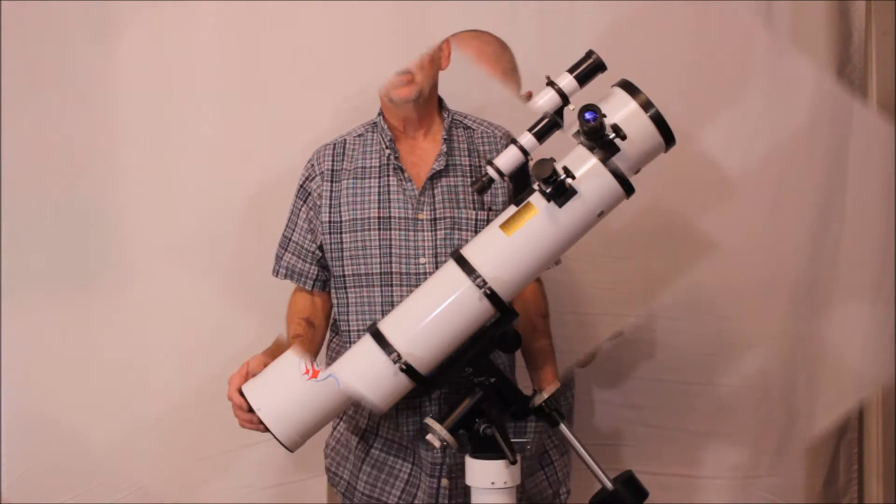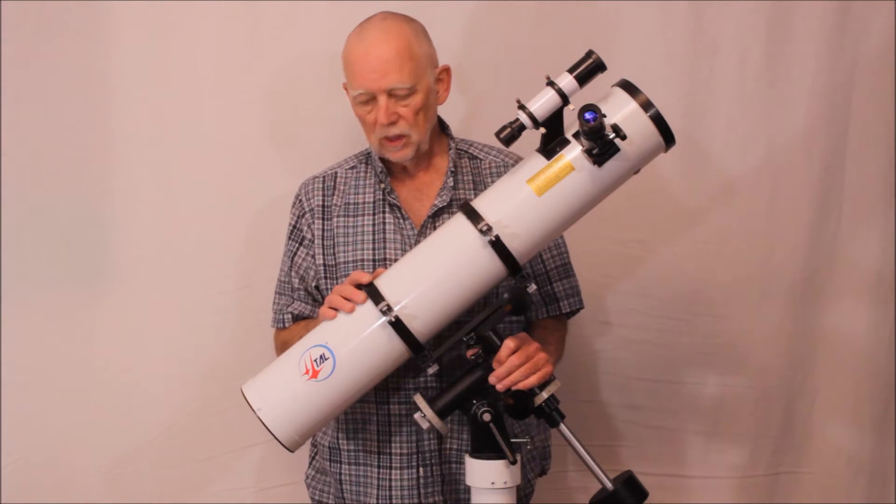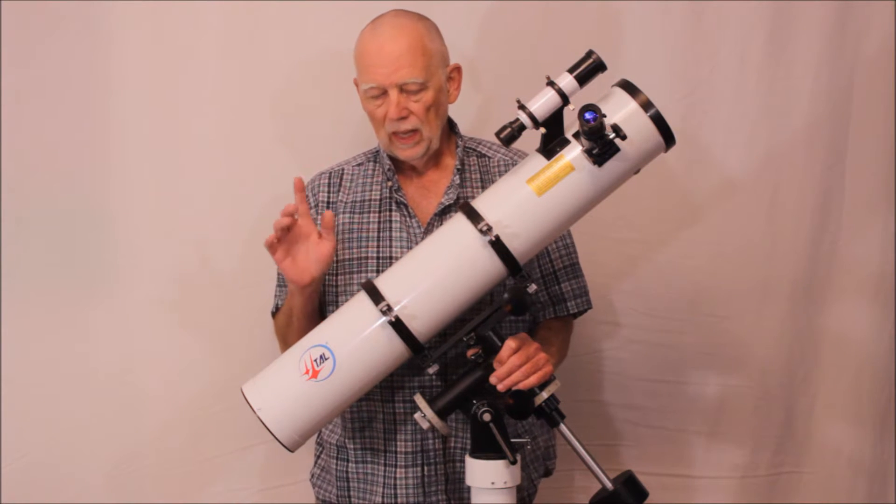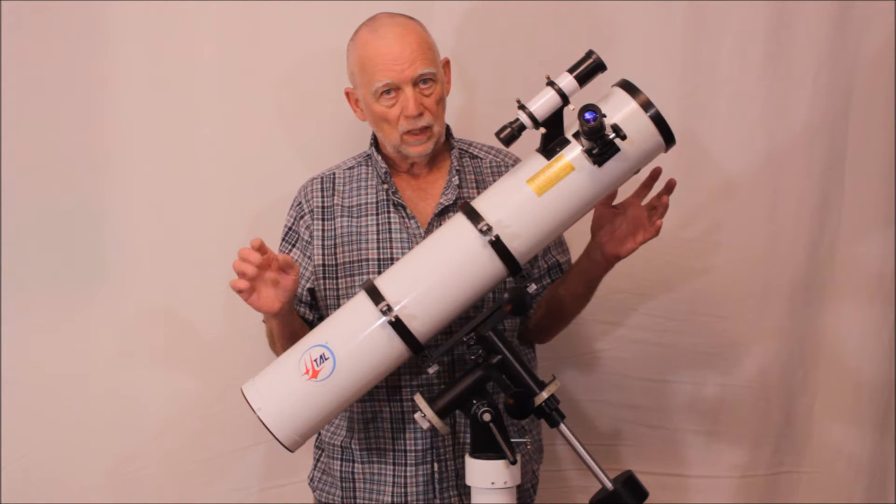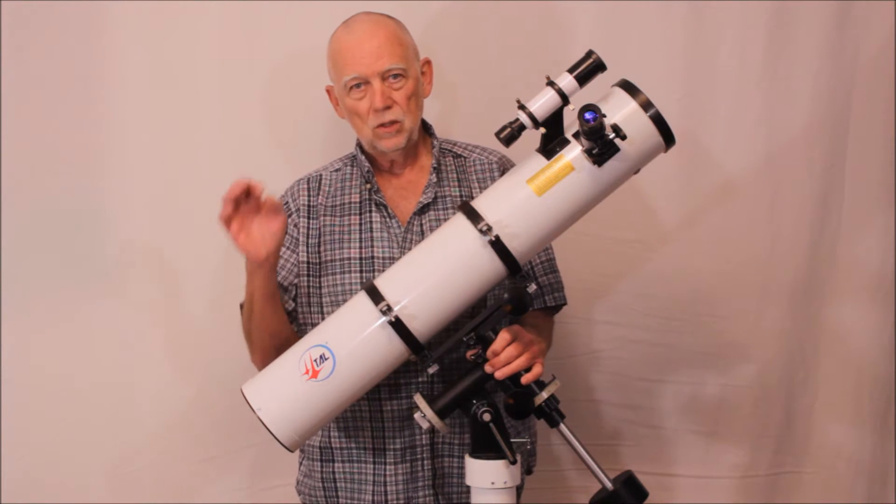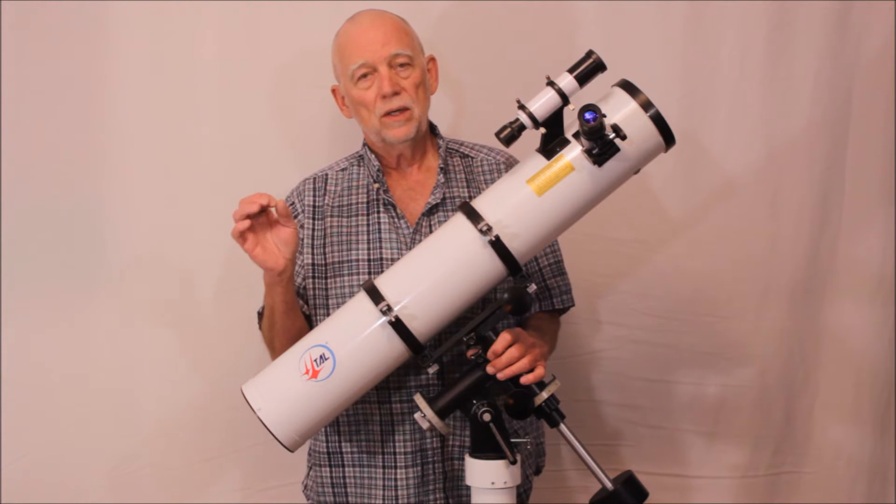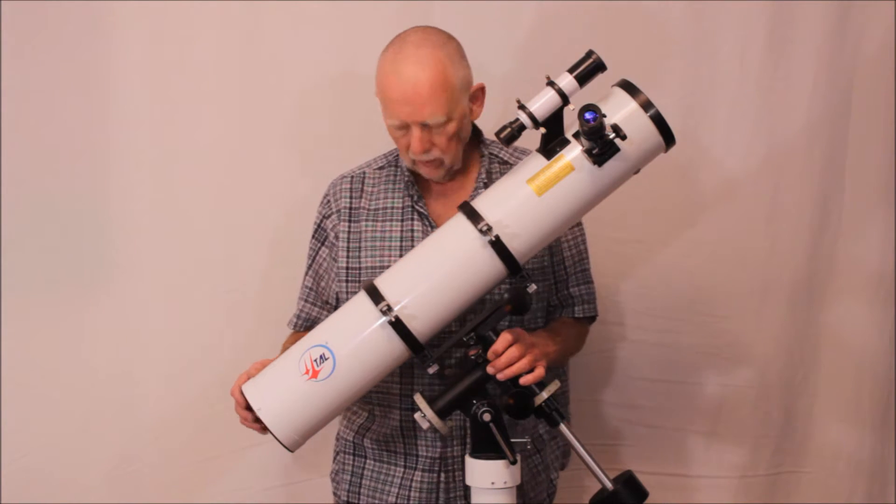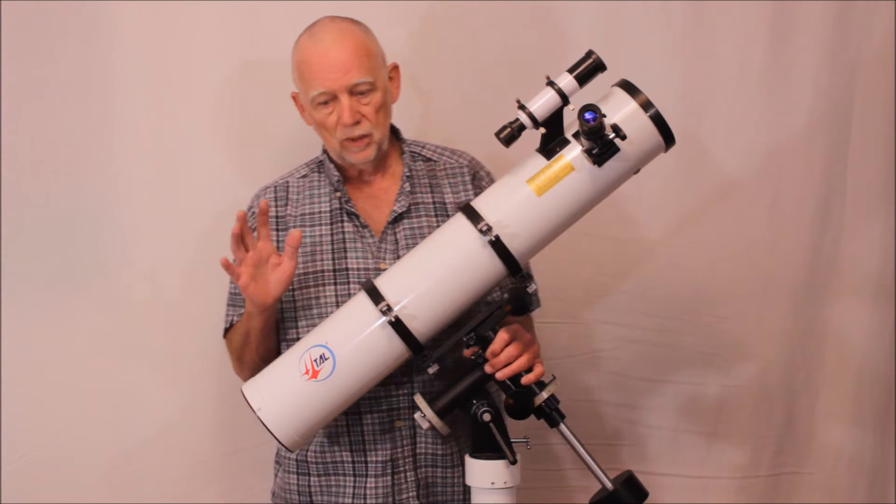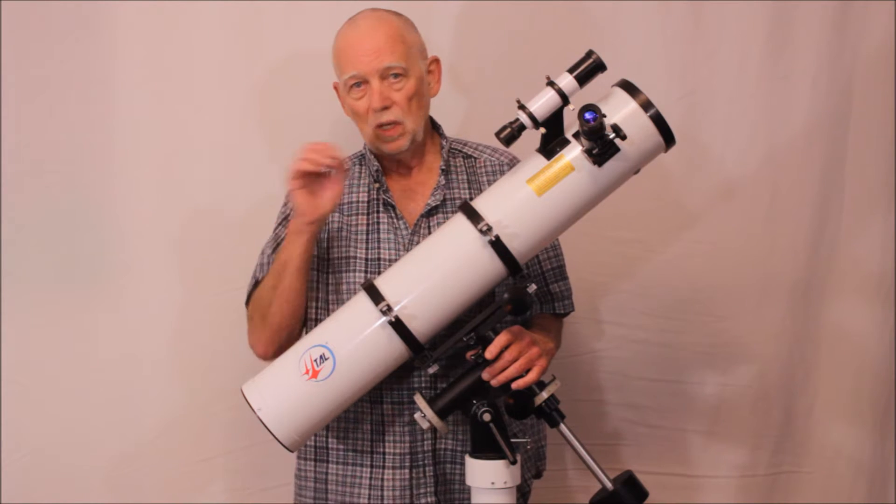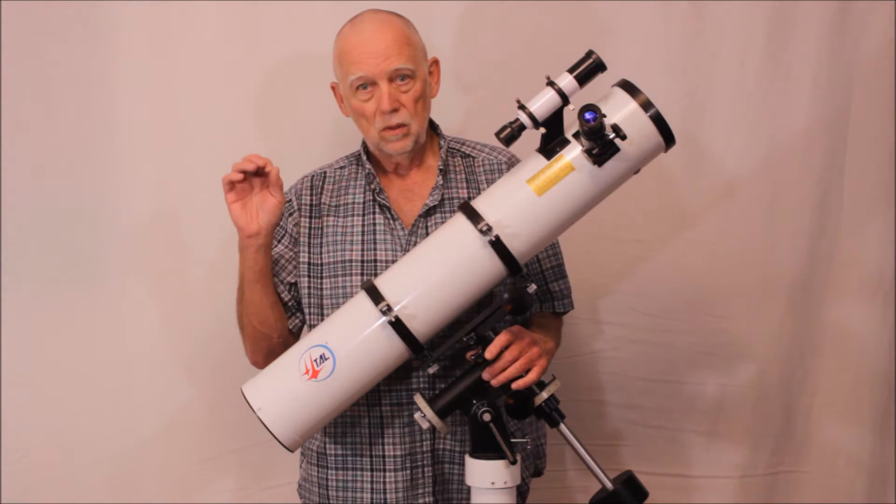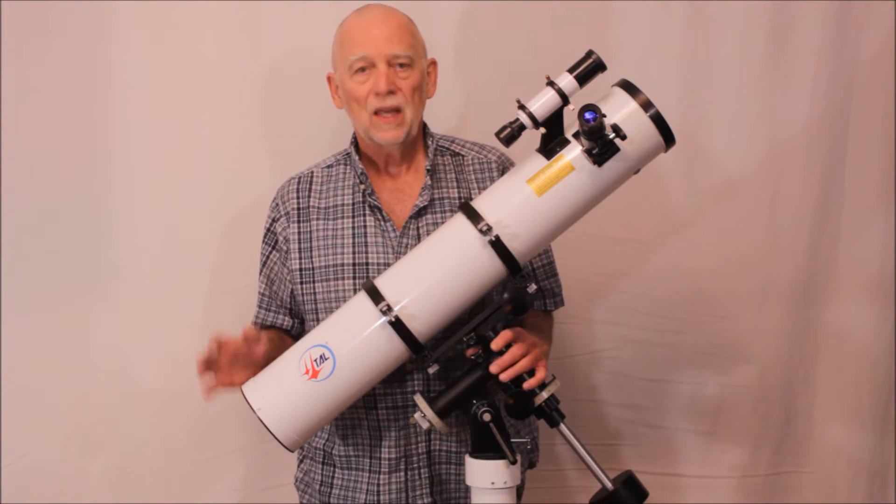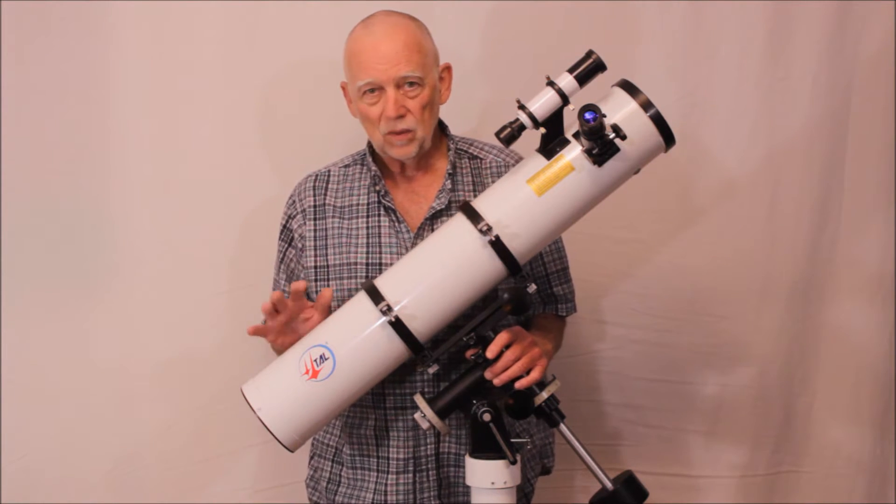The TAL-1 telescope is 110 millimeter f7.3, so at f7.3 and 110 millimeters, it just barely meets the Rayleigh criterion if you use a spherical mirror. That's what they did. The Russian philosophy apparently goes to being very practical and doing just what's adequate. The perfect is the enemy of the good enough, I think that's a rough translation of a Russian saying.